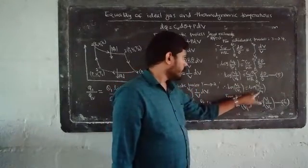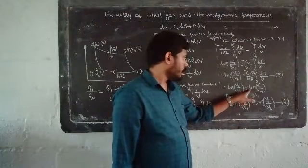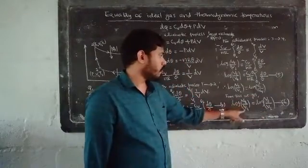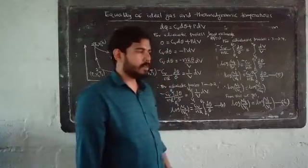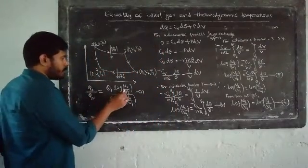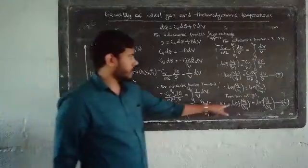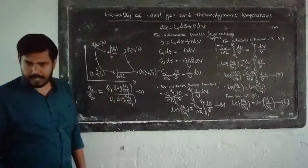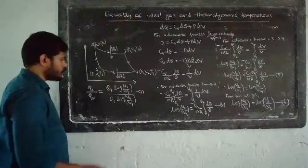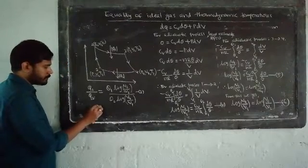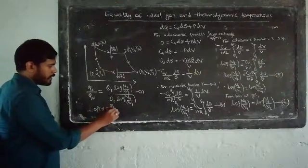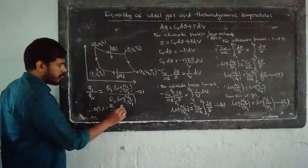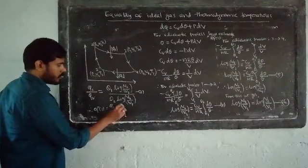Therefore, log V4 by V1 equals log V3 by V2. Substituting into equation 3, Q1 by Q2 equals theta1 by theta2.